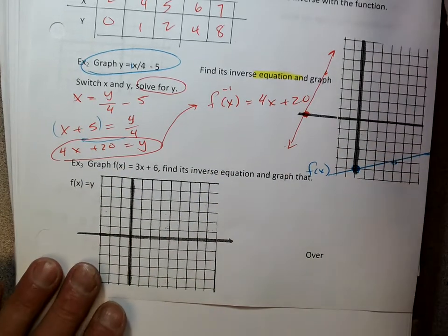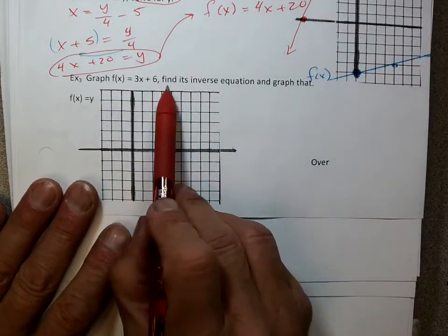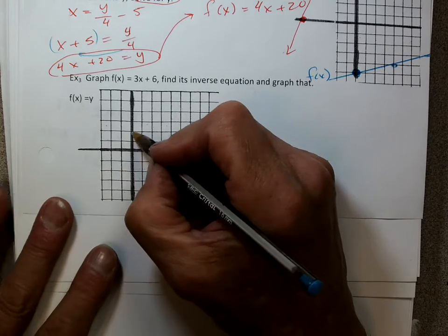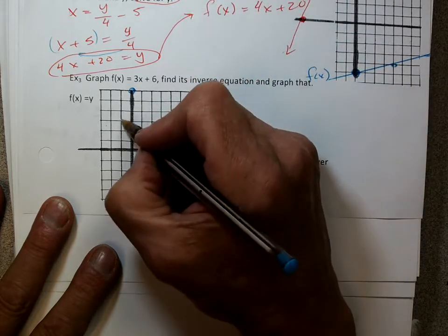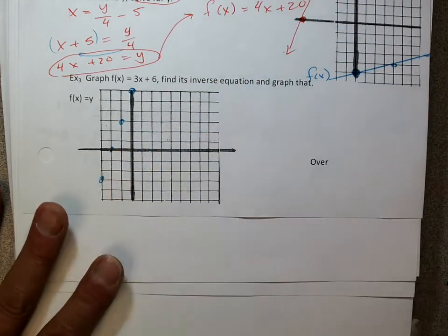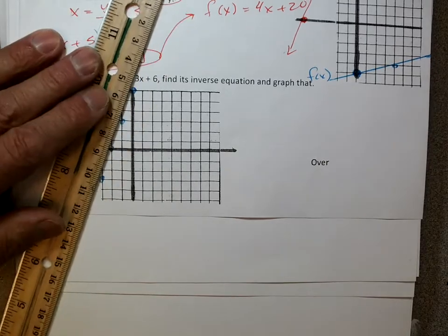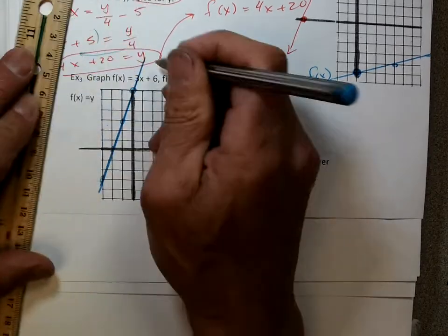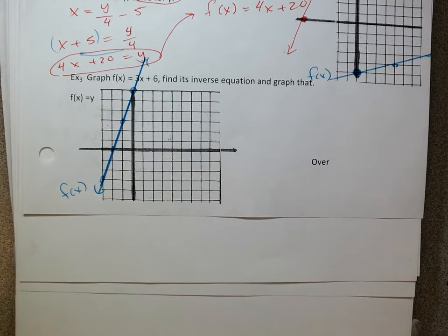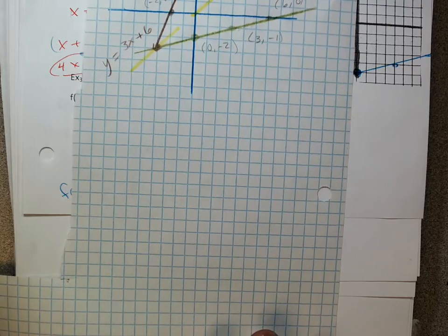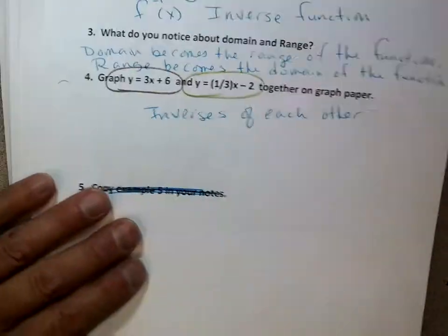Example three: y equals 3x plus 6. Start at 6, up 3 over 1 — basically this graph right here. This is what we did in the reading — exact same problem. On the reading I already gave you the inverse equation: one-third x minus 2. We already know the answer has to be one-third x minus 2.